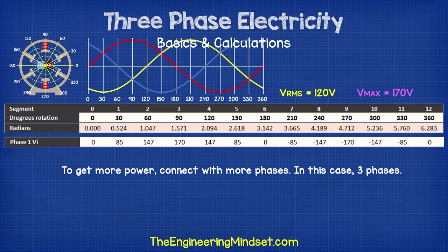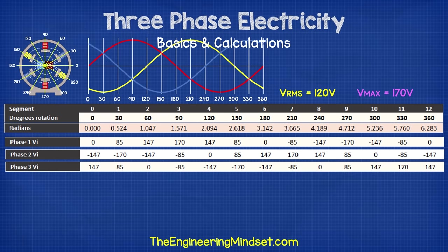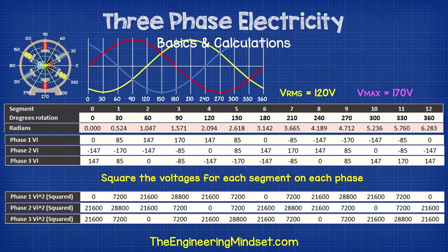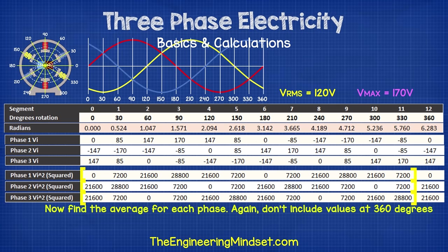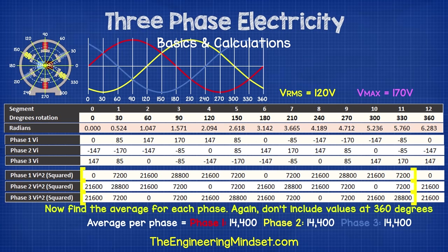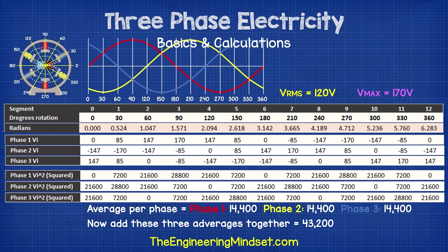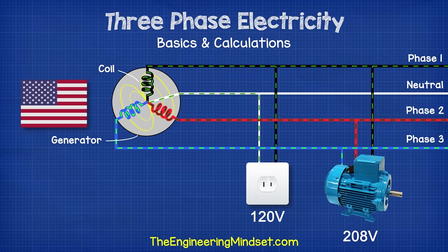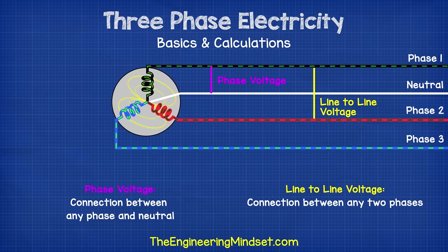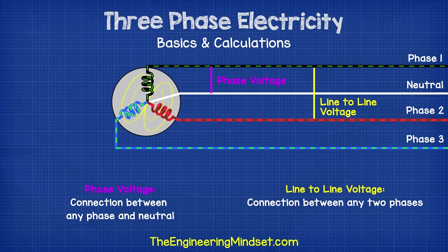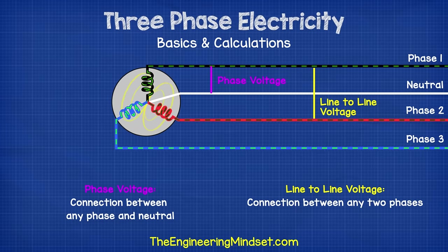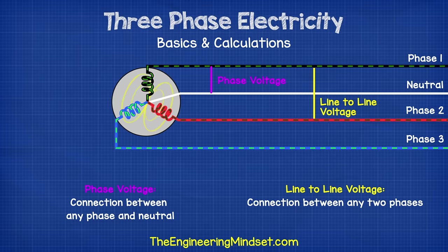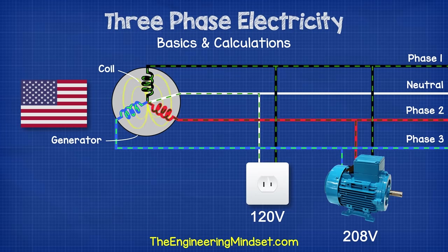To get more power, we can connect to all three phases. We calculate the supplied voltage by squaring each of the instantaneous voltages on all three phases, finding the average for each phase individually, adding these three averages together, and then taking the square root of that number. The three-phase voltage comes out to 208 volts. We call the smaller voltage our phase voltage — obtained by connecting between any phase and the neutral line. We call the larger voltage our line-to-line voltage — obtained by connecting between any two phases. That's how we get more power from the supply.